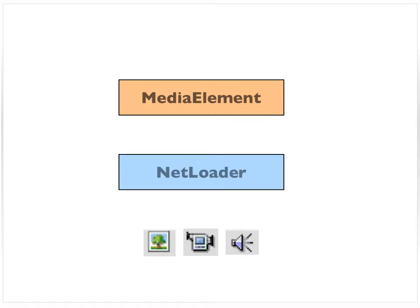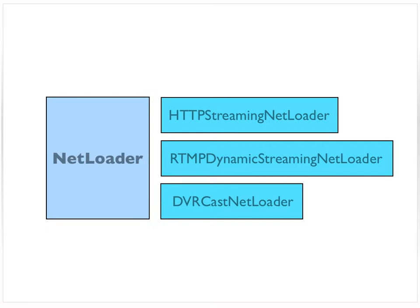When we don't tell the media element or the media factory — however we're creating it — if we don't tell it to do anything special, it's just going to create a new net loader for us. But there are actually three types of net loaders — three classes that inherit from net loader. So effectively four types of net loader: we have the net loader and three inheritors.